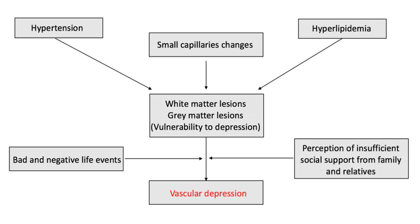Cerebrovascular risk factors for vascular depression include high blood pressure, diabetes mellitus, coronary heart disease, and tobacco smoking, with high blood pressure being the most commonly identified risk factor. However, these factors do not account for all cerebrovascular changes in individuals as genetics may play a large role as well. Research has found that white matter lesions are particularly important in predicting future depression.